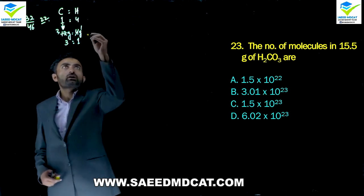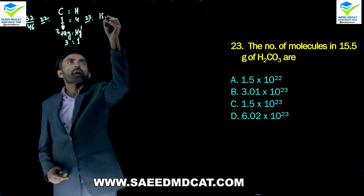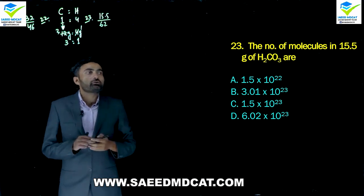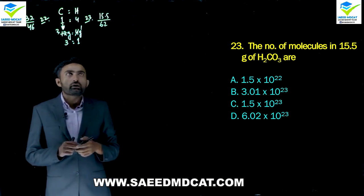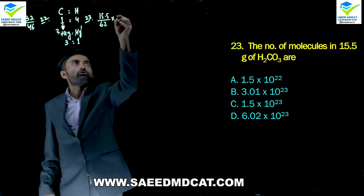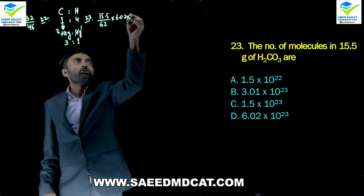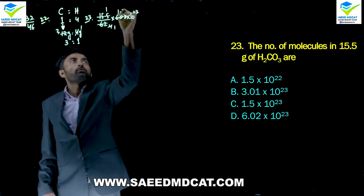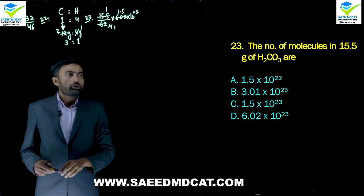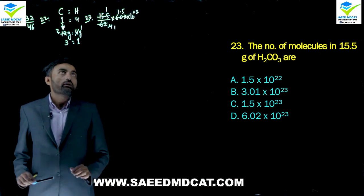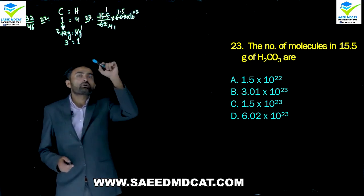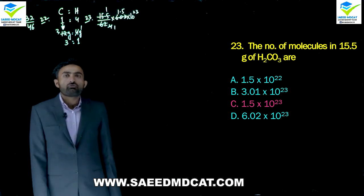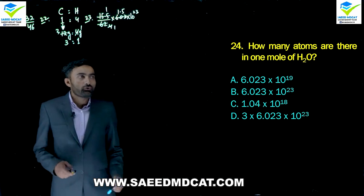Question 23: Number of molecules in 15.5 g of carbonic acid (H2CO3). Molar mass = 2(1) + 12 + 3(16) = 2+12+48 = 62 g/mol. Moles = 15.5/62 = 0.25. Molecules = 0.25 × 6.02×10²³ ≈ 1.5×10²³. Charlie option is correct.